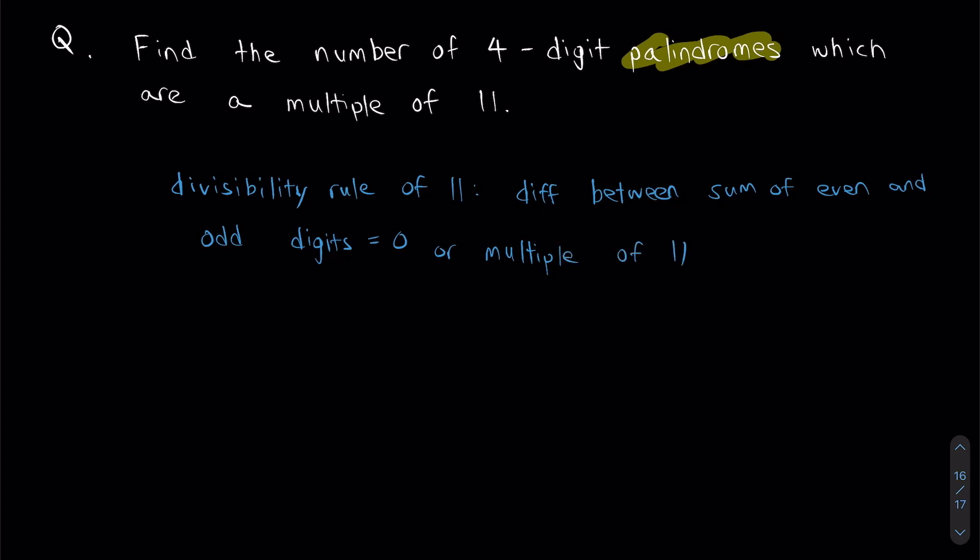So what does that mean? Let's say I have a number maybe 1, 3, 3, 1. My odd digits added together, that's 1 plus 3 equals 4. My even digits added together, 1 plus 3 equals 4. The difference between my even and odd digits, 4 minus 4 equals 0. Which means the number 1, 3, 3, 1 is divisible by 11.